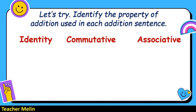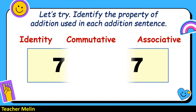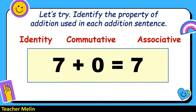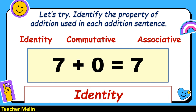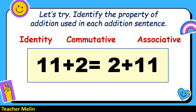Let's try. Identify the property of addition used in each number sentence — it could be identity, commutative, or associative. First: 7 plus 0 equals 7. The answer is identity — this is an identity property of addition.